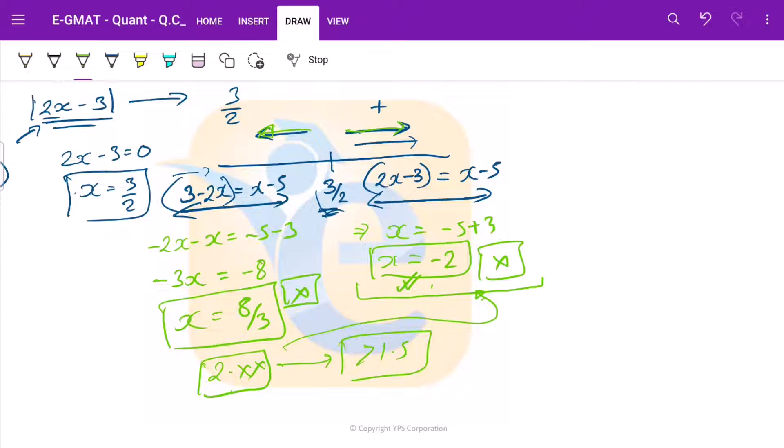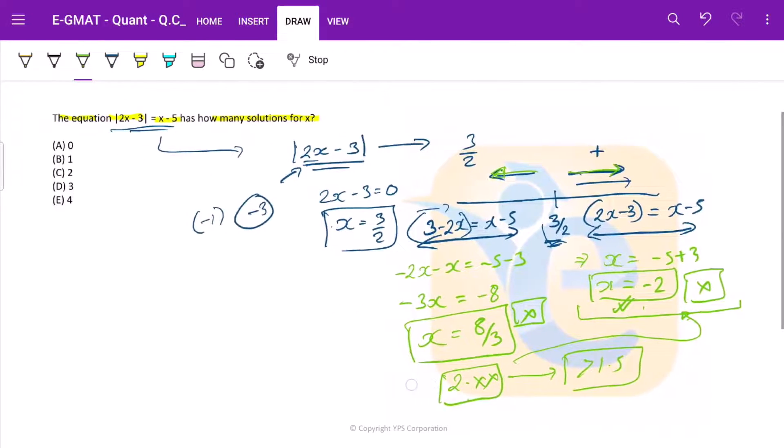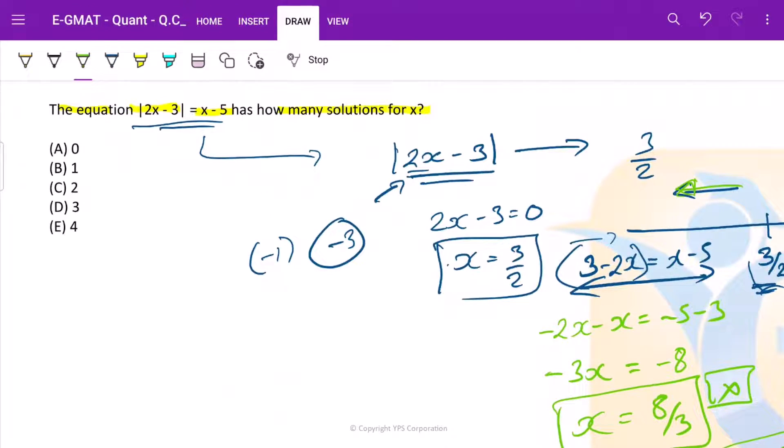So this equation effectively has zero solutions. How many solutions for x? We have zero solutions for x.